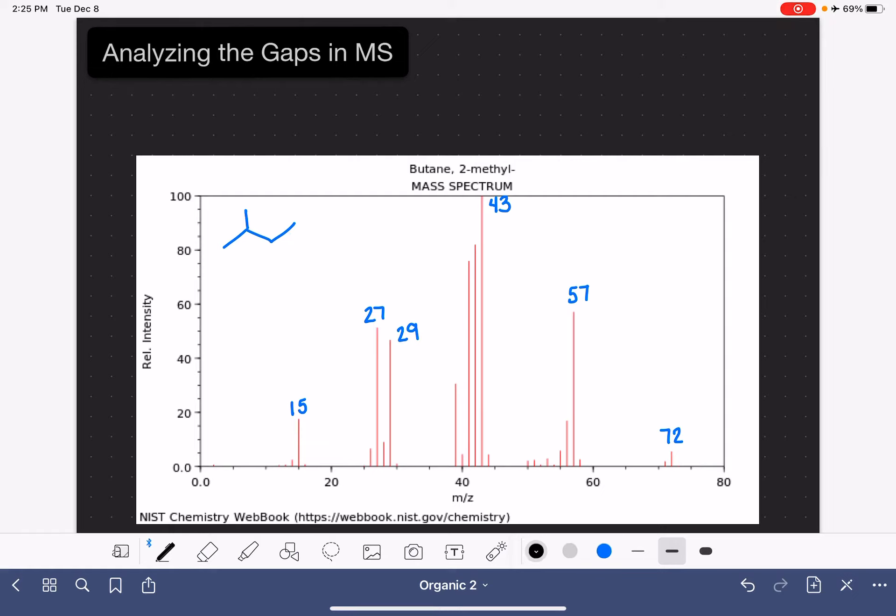So for example, between 57 and 72, the gap there is 15. 72 minus 15 is 57.